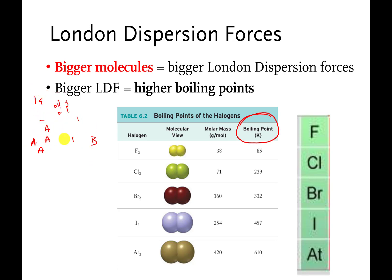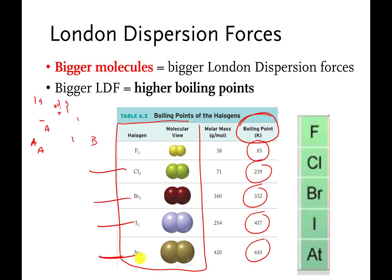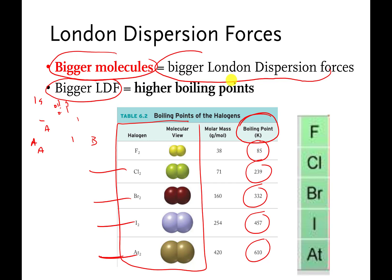Looking at this chart, the bigger the molecule is — as long as things are more or less the same between the molecules you're comparing — the harder it is to boil them away. You can see the boiling point going up as the molecules get bigger. So the idea is bigger molecules have more London dispersion forces. Bigger London dispersion forces means a higher boiling point because the atoms or molecules are going to want to stick to each other a little bit more.